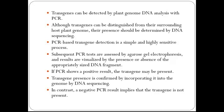Subsequent PCR tests are assessed by agarose gel electrophoresis, and results are visualized by the presence or absence of an appropriately sized DNA fragment. If PCR shows a positive result, the transgene may be present, and its presence is confirmed by incorporating it into the genome by DNA sequencing. In contrast, a negative PCR result implies that the transgene is not present.